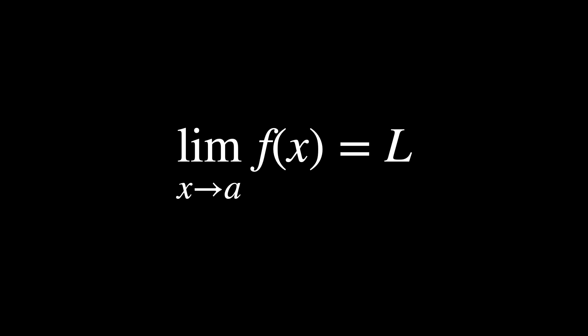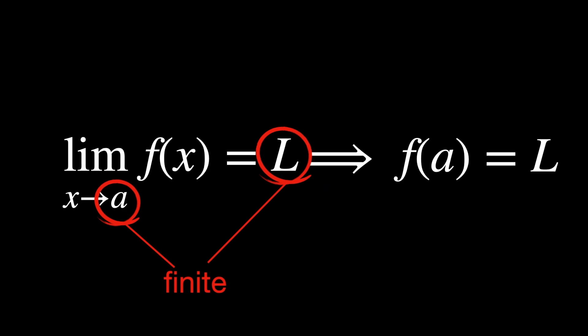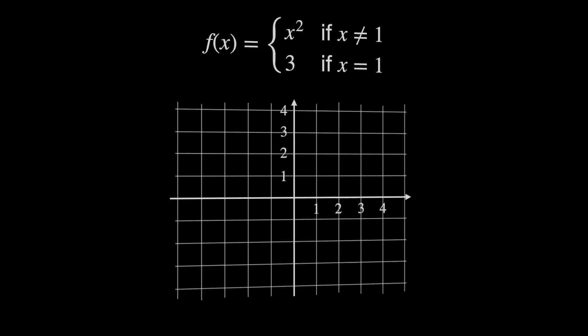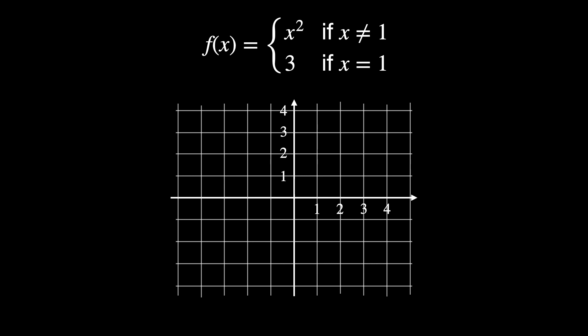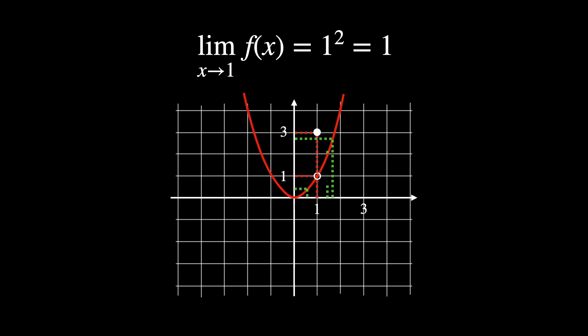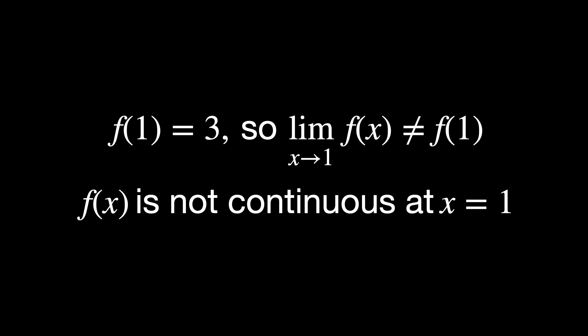Notice, though, that just because the limit of a function with x tends to a finite value a is finite, so l, it doesn't mean that the function itself is continuous at that point. In other words, it doesn't mean that f of a equals l. Let's see a counterexample. Consider the function f of x equals x squared if x is not 1 or 3 if x is 1. The limit of this function as x tends to 1 is 1. This is true for the limit from the right and from the left of x equals 1. However, when we look for the value of the function exactly at the point x equals 1, we find out that f of 1 is 3. So its limit with x tends to 1 is not equal to f of 1. And thus, we say that f of x is not continuous at the point x equals 1.